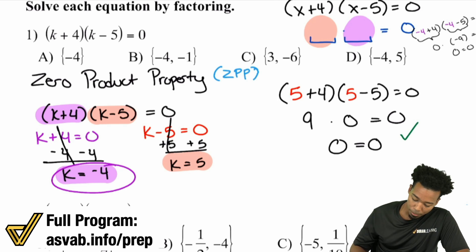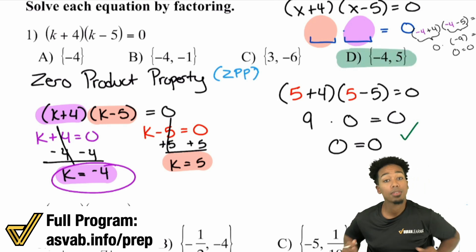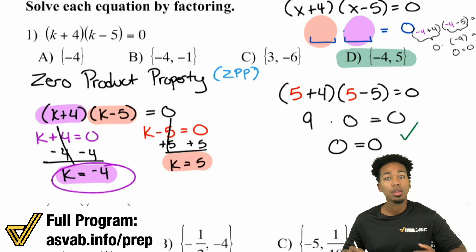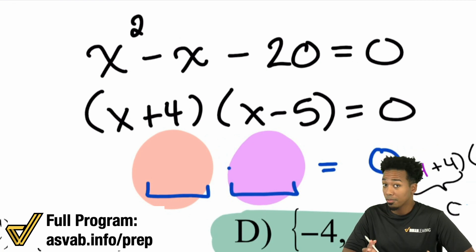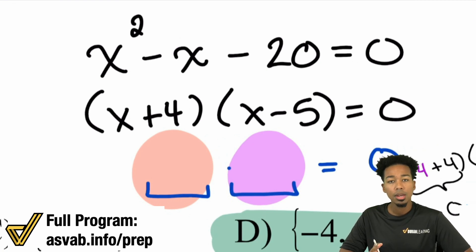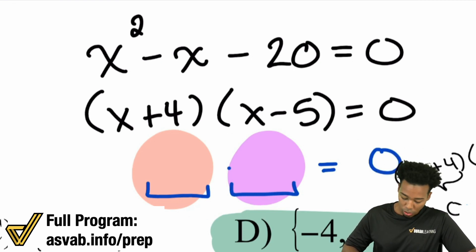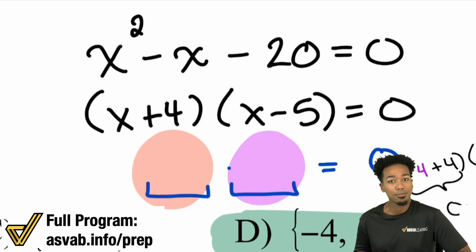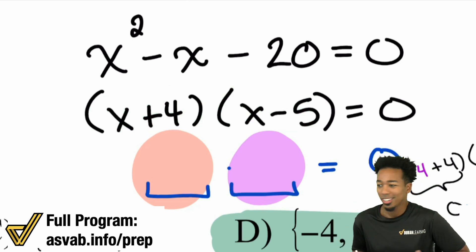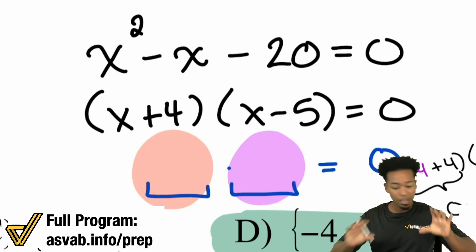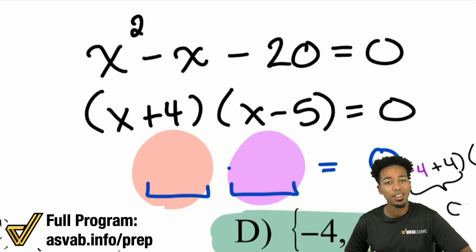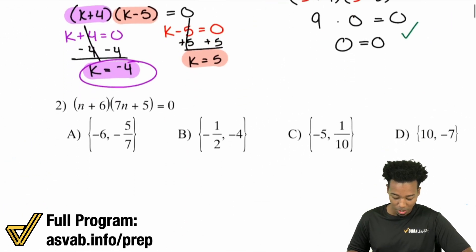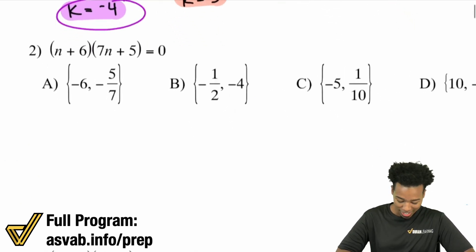This is a very important step to take, because in the following video — after you do the worksheets and after you do the speed drills — you're going to have equations that aren't factored already and you'll have to modify them, factor them, and turn them into this form. Because once you have it in that form, you just apply the zero product property. You separate those parentheses, set them each equal to zero, find out what makes the whole thing zero, and you're good.